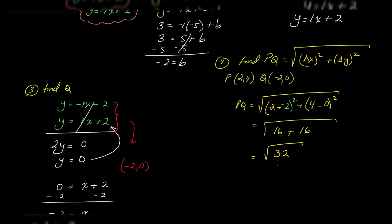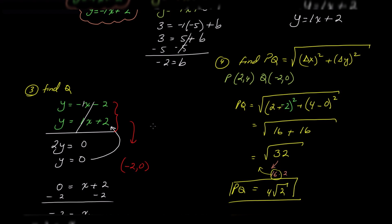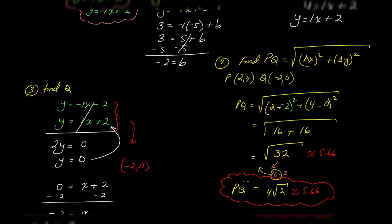We can simplify the square root of 32. Since 32 equals 16 times 2, and 16 is a perfect square, we can take out the square root of 16, giving us 4 times the square root of 2. So PQ, the distance between the point and the line, is 4 times the square root of 2, or approximately 5.66.